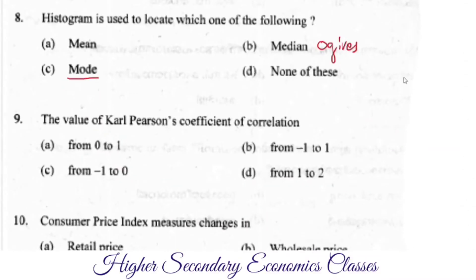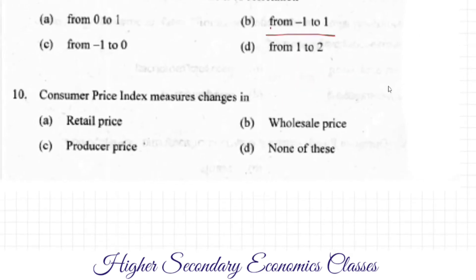The value of Karl Pearson's coefficient of correlation ranges from minus 1 to plus 1. The options include from 0 to 1, from minus 1 to plus 1, from minus 1 to 0, and from 1 to 0. The correct answer is minus 1 to plus 1.